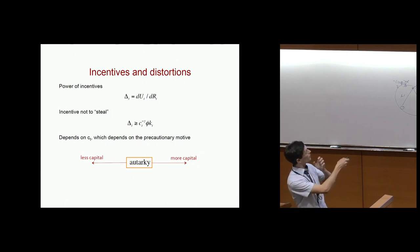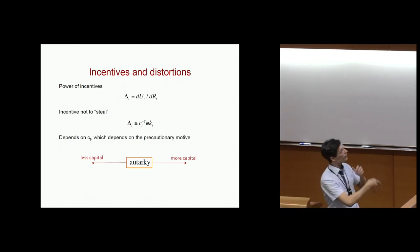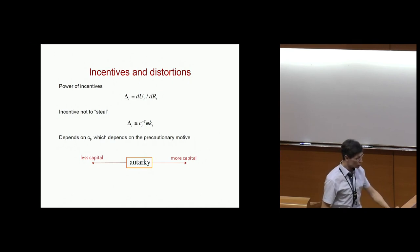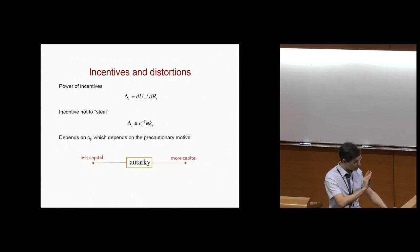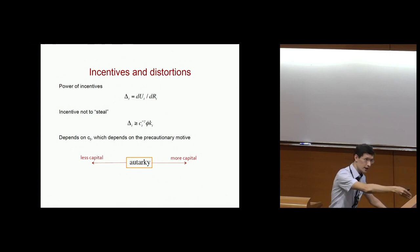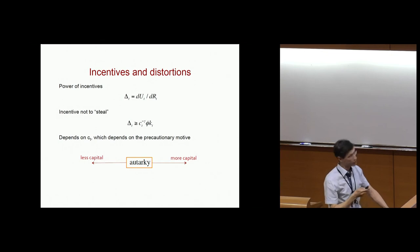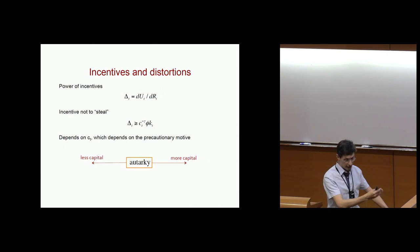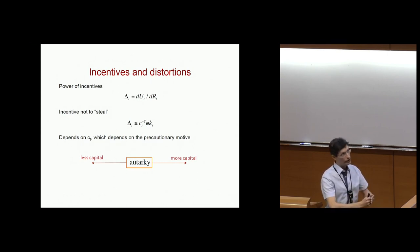Relative to autarky, the optimal contract actually gives the agent more capital, but in the future provides a safer contract. Giving more capital means a bigger portfolio weight on the risky asset right now, but committing to a lower portfolio weight on the risky asset in the future, which reduces the precautionary motive. Ex post, you create these distortions, and these distortions help ex ante. There's one more feature of the optimal contract, but since I'm out of time, I won't tell you today — I'll cover it tomorrow, when I can go through some math.